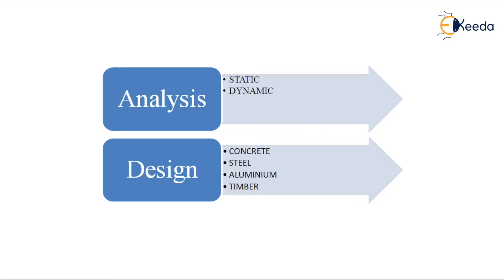The next term is analysis. In structural engineering, we do mainly two types of analysis. First one is static analysis and second one is dynamic analysis. In static analysis, we do not change the load with respect to time — the load remains the same throughout the life of the building. If you apply a load of 3 kN per meter square at the time of designing, the load remains the same up to the life of the building. In static analysis, we find out bending moment, shear force, deflection, and support reaction.